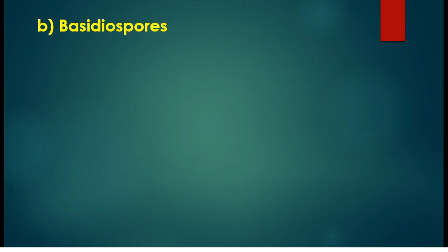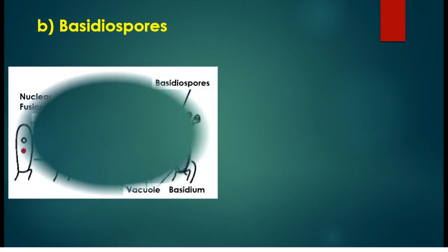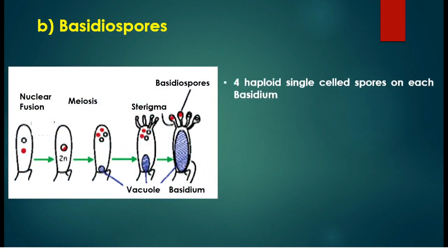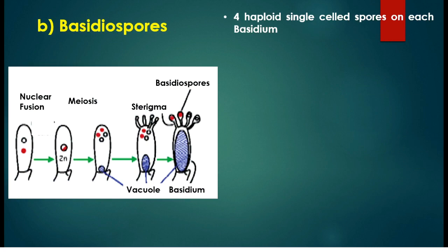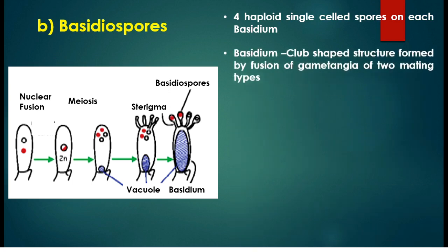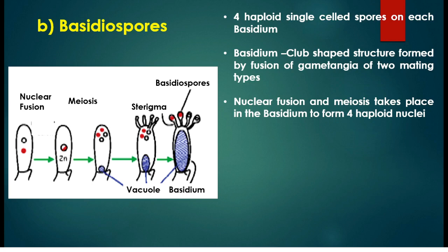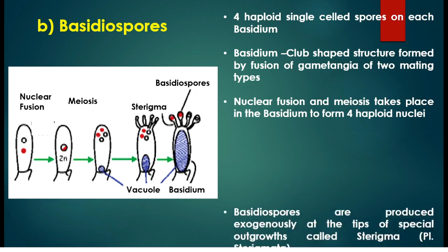Basidiospores are four haploid single-cell spores produced on a structure known as the basidium. The basidium is a club-shaped structure formed by the fusion of gametangia of two mating types. Nuclear fusion takes place inside the basidium, followed by meiosis, producing four haploid nuclei.